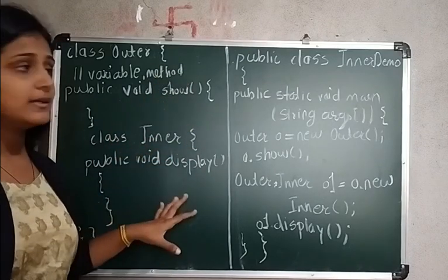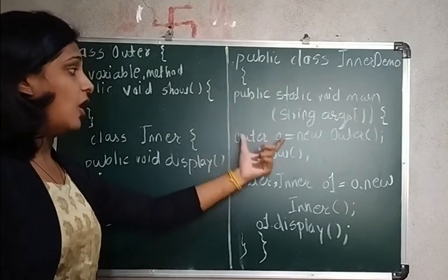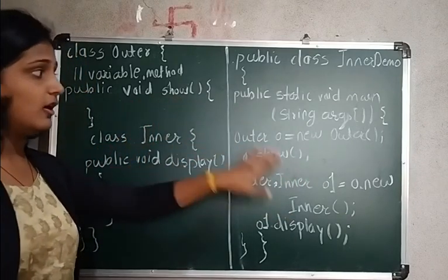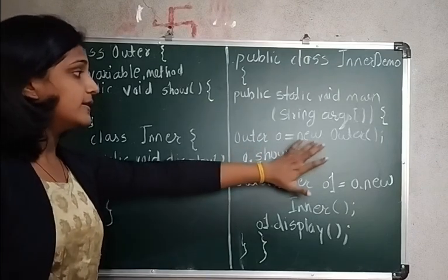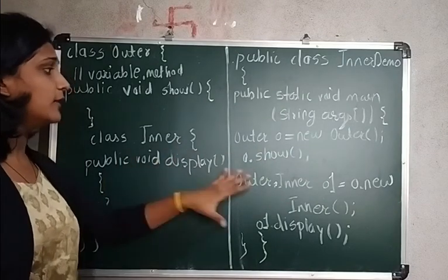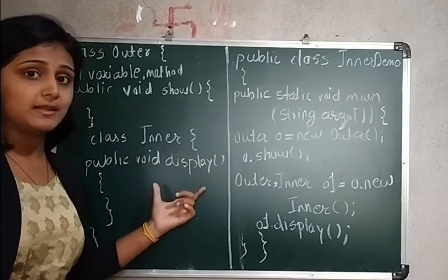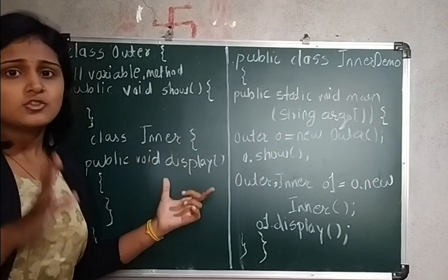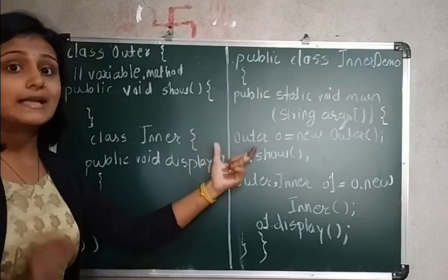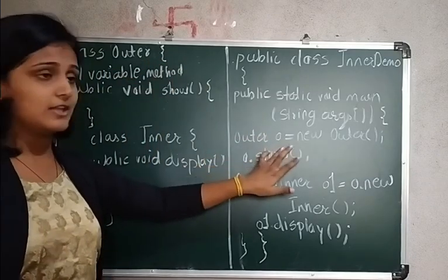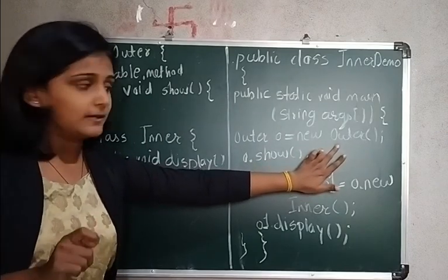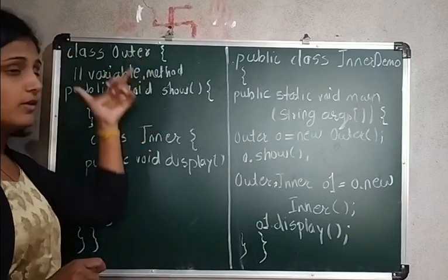In the public static void main method, as usual, we create an object and use it to call methods. So I have created an object of the outer class: Outer o = new Outer(). Using o.show(), the show method of the outer class is called. But if you try to call the display method of the inner class in the same way, you will get an error.